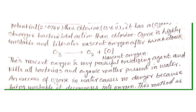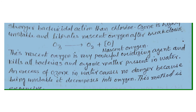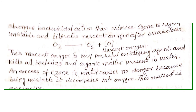The next method is the ozonolysis method. Because of ozone's highly oxidation potential of 2.07 — greater than chlorine's 1.36 — it has a stronger bactericidal action than chlorine. Ozone is highly unstable and liberates nascent oxygen after breakdown. The ozone molecule breaks down into oxygen and nascent oxygen [O], and this nascent oxygen, being a powerful oxidizing agent, oxidizes and destroys all the bacteria or disease-causing microorganisms.